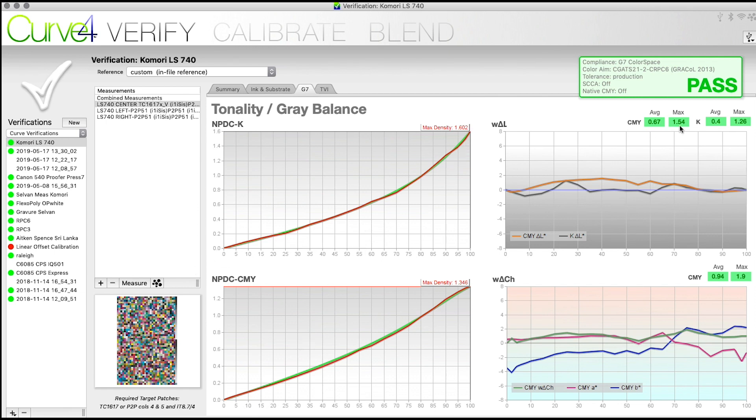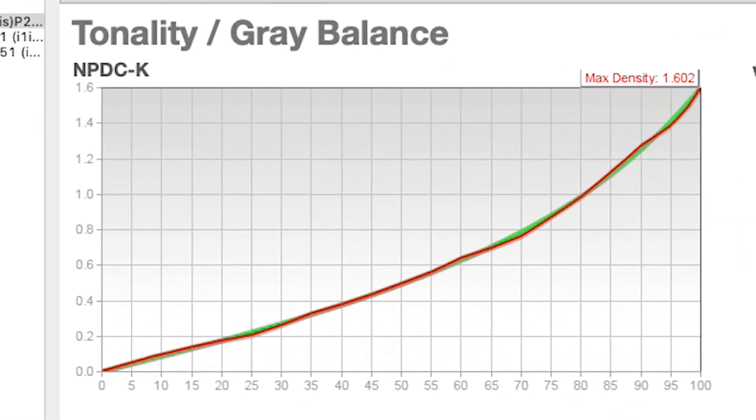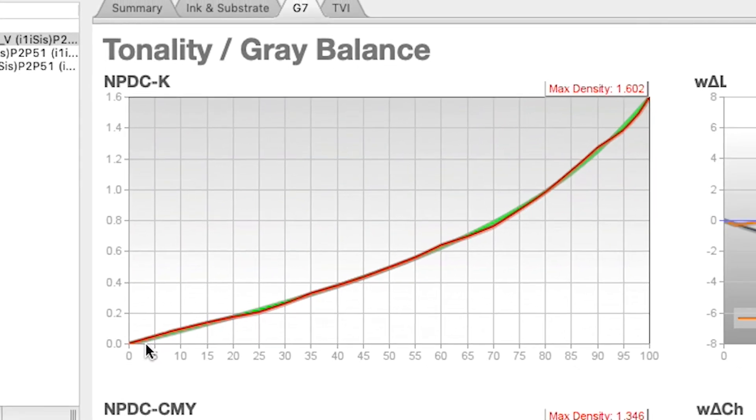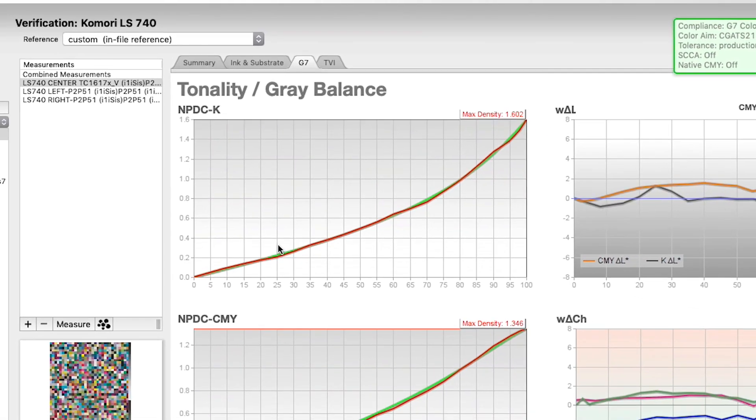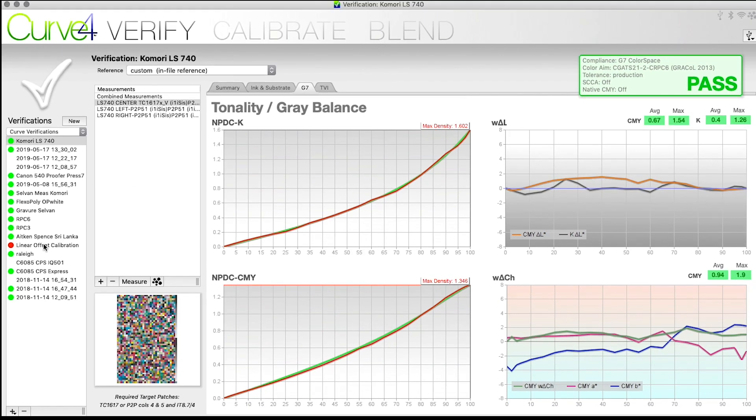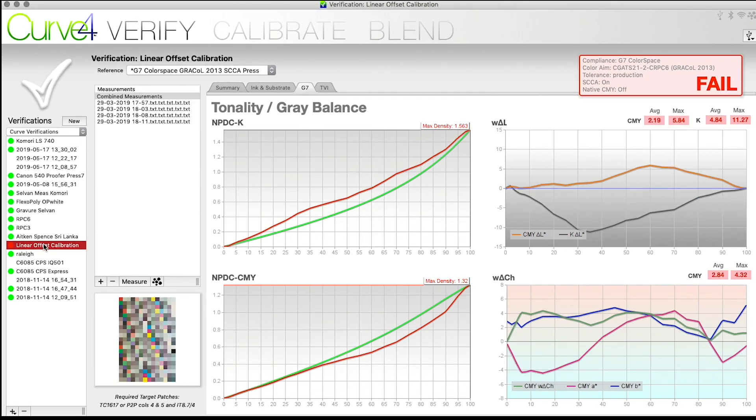The black ramp and then the CMY ramp look very good. Of course we have a pass over here. The red line is the measured and the green line is the target, so I'm just about perfect on both the CMY curve down here and the black curve.